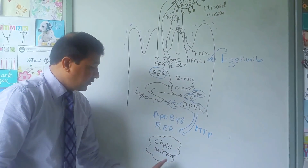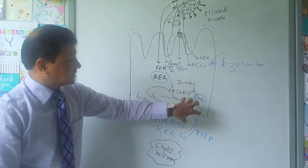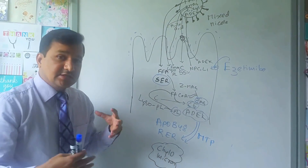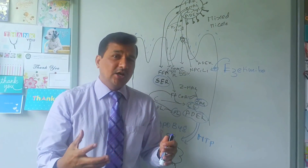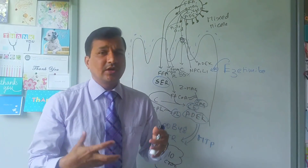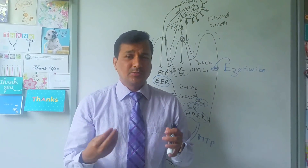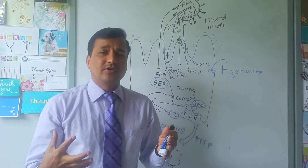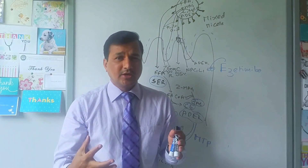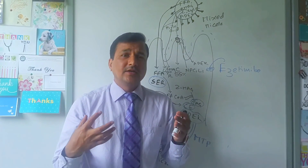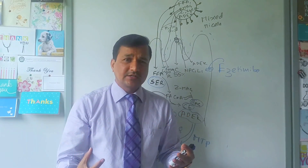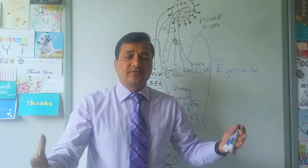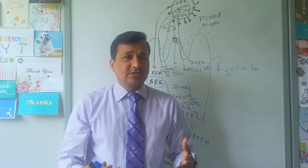A chylomicron is a lipoprotein molecule with apolipoprotein B48 as a protein coating, and inside it contains TAGs, cholesterol esters, phospholipids, and vitamins A, D, E, K. Chylomicrons are huge molecules and cannot be secreted into the portal system because portal fenestrations are too small. That is why chylomicrons are secreted into the lymphatics.